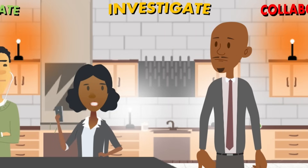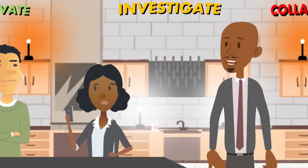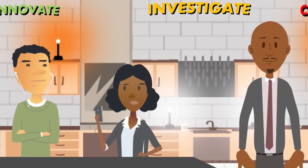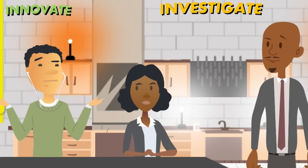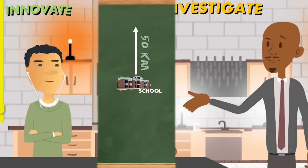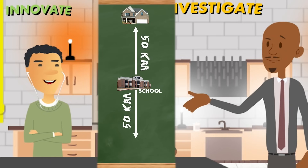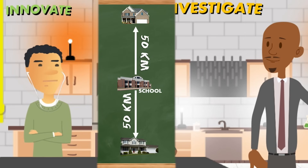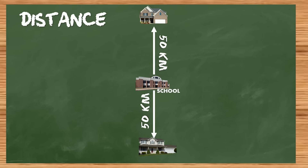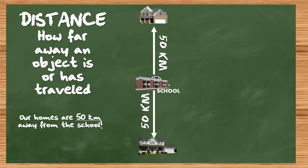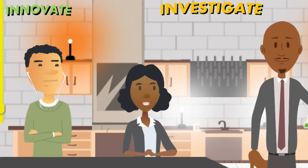None of that explains why you were late today. Well, I live 50 kilometers away from the school. So do I. Well, I live 50 kilometers north of the school. Oh, I live 50 kilometers south of the school. The distance we live away from the school is the same. Distance is simply how far away an object is or has traveled, and it doesn't account for direction.